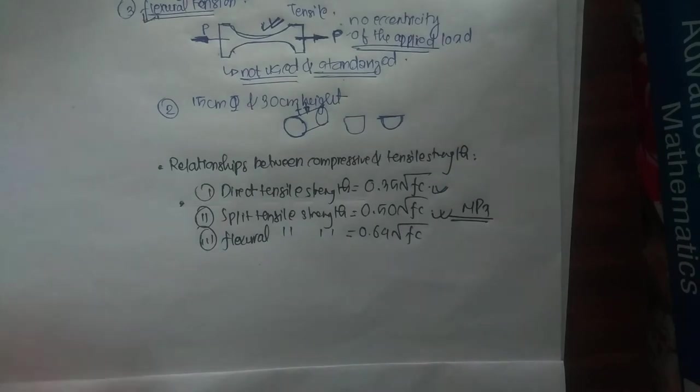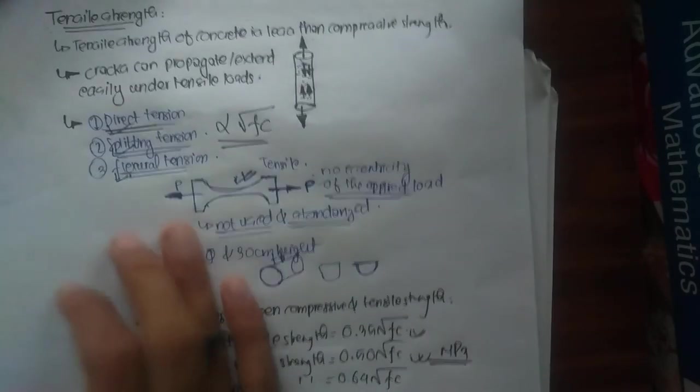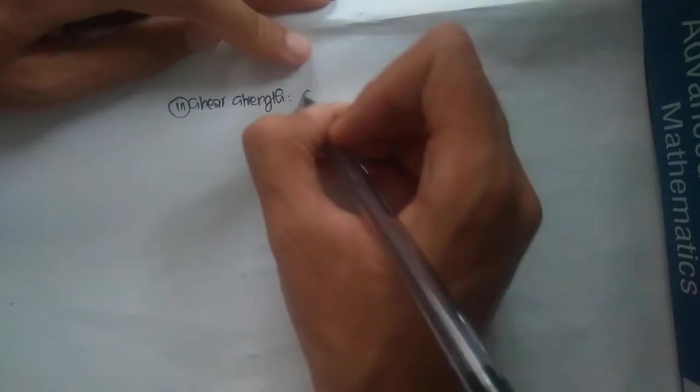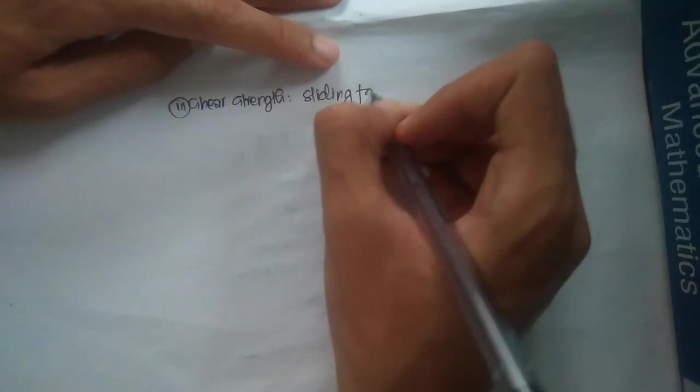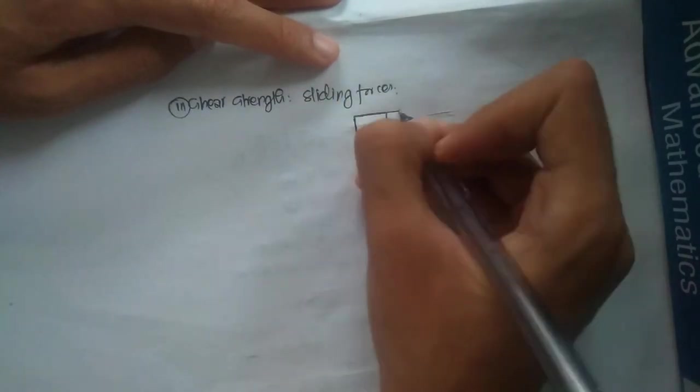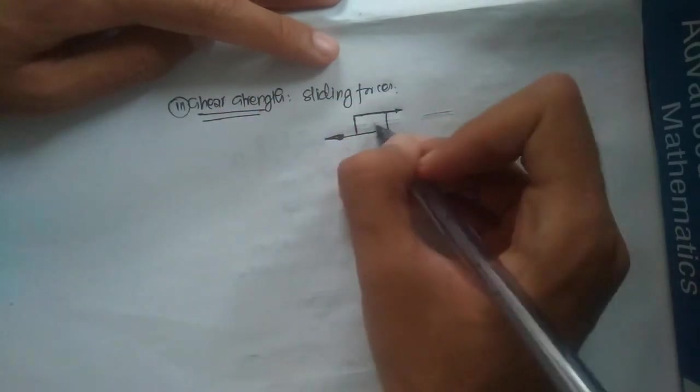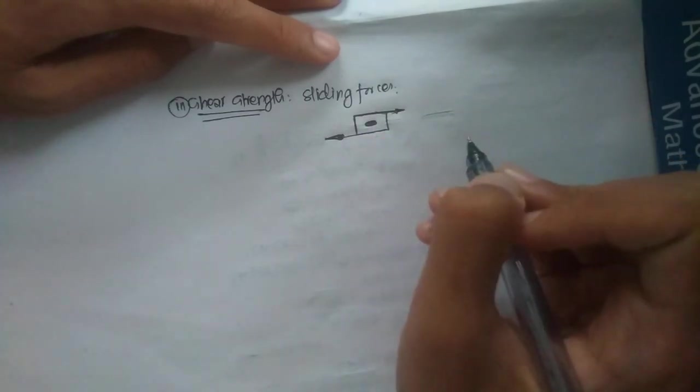We have now completed tensile strength and compressive strength, the two most important strengths of any concrete. Now we will talk about other strengths. In third place, we have shear strength. Shear is defined as sliding or tangential forces. Shear strength is the measure of resistance of any concrete specimen against such sliding or tangential forces.